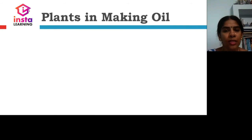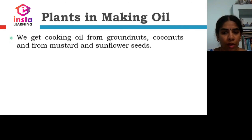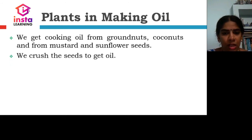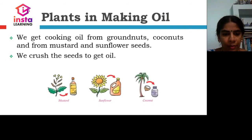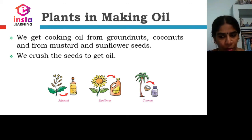Let us see how plants help in making oil. We get cooking oil from groundnut, coconuts, and also from mustard and sunflower seeds. We crush the seeds to get the oil. If the seeds of the mustard plant are crushed, we get mustard oil. If we crush the seeds of the sunflower, we get sunflower oil. If we crush the seeds of the coconut, we get coconut oil.